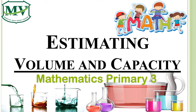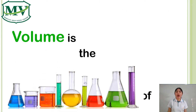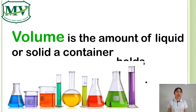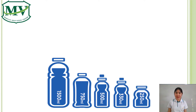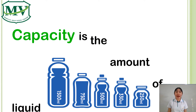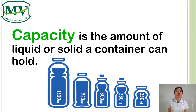Estimating Volume and Capacity for Pratom 3. Volume is the amount of liquid or solid a container holds, while capacity is the amount of liquid or solid a container can hold.